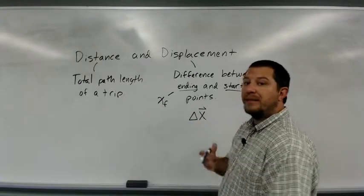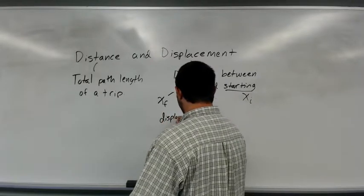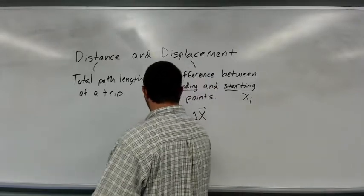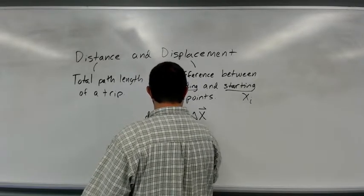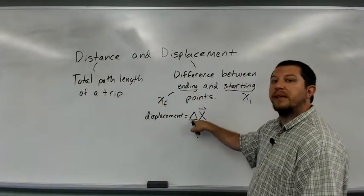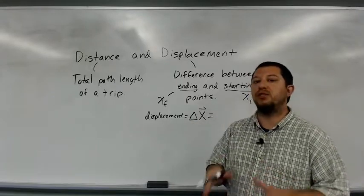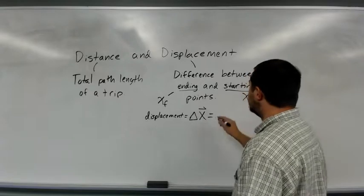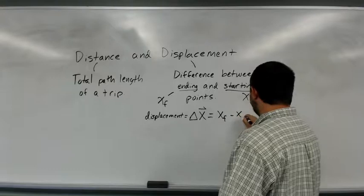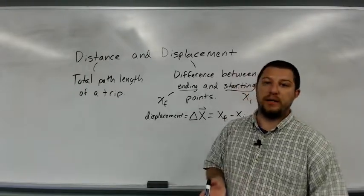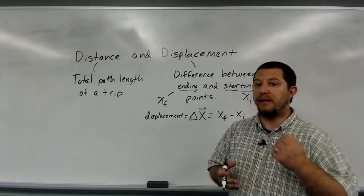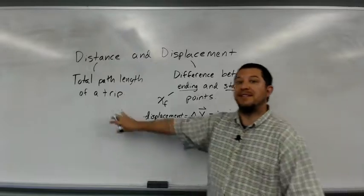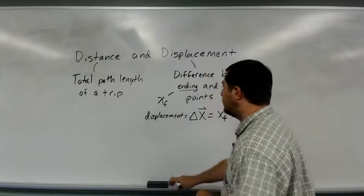Delta-x means displacement. Anytime we have the delta symbol that means 'change in,' so in this case it means change in x. The change in x is defined as the final position minus the initial position. To find the displacement between two points along a path, find the initial position and final position and take the difference — that gives you displacement. Distance is once again the total path length. Let's solidify this with a few examples.